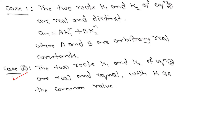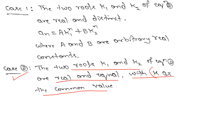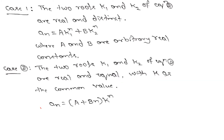In case 2, if the roots K1 and K2 of the characteristic equation are real and equal with K as the common value, suppose the equal roots are some K, then the solution of the second order homogeneous recurrence relation is given by An equals (A plus Bn) into K to the power n, where K is the repeated root.